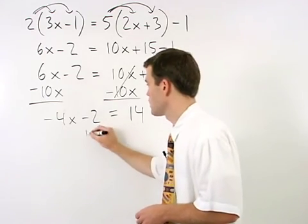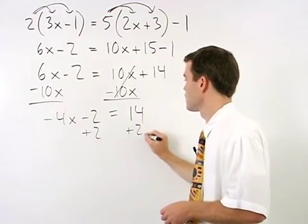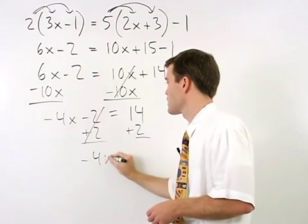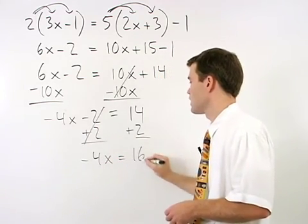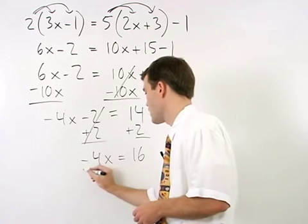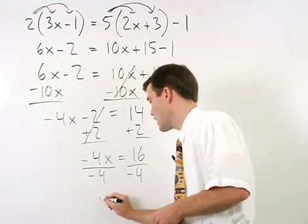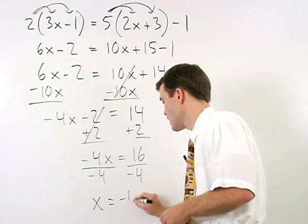Add 2 to both sides and we have negative 4x equals 16. Divide both sides by negative 4 and x equals negative 4.